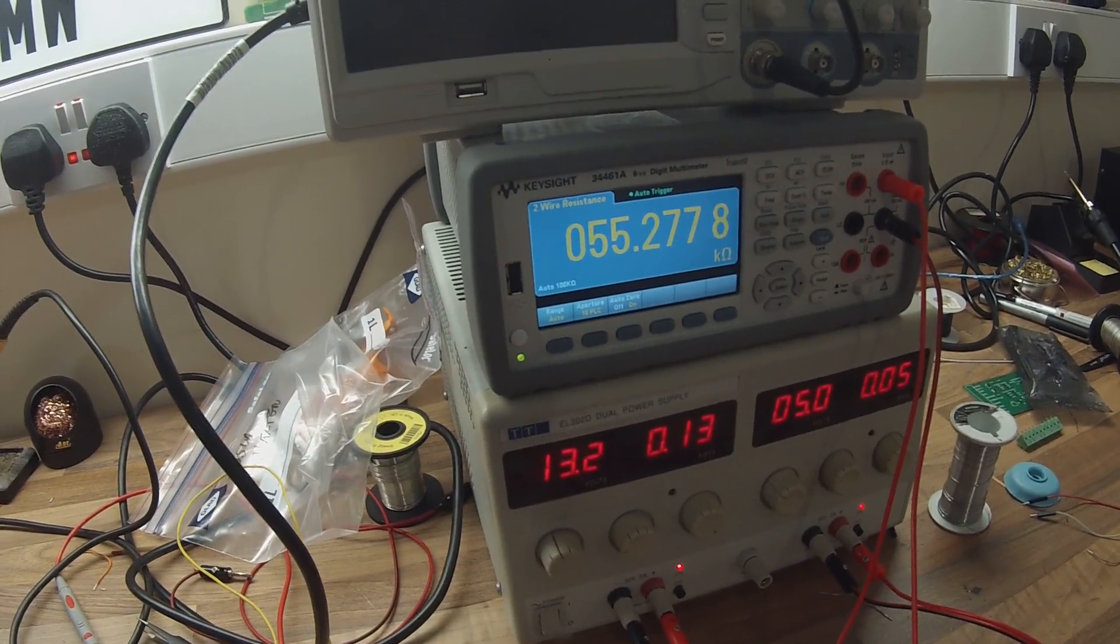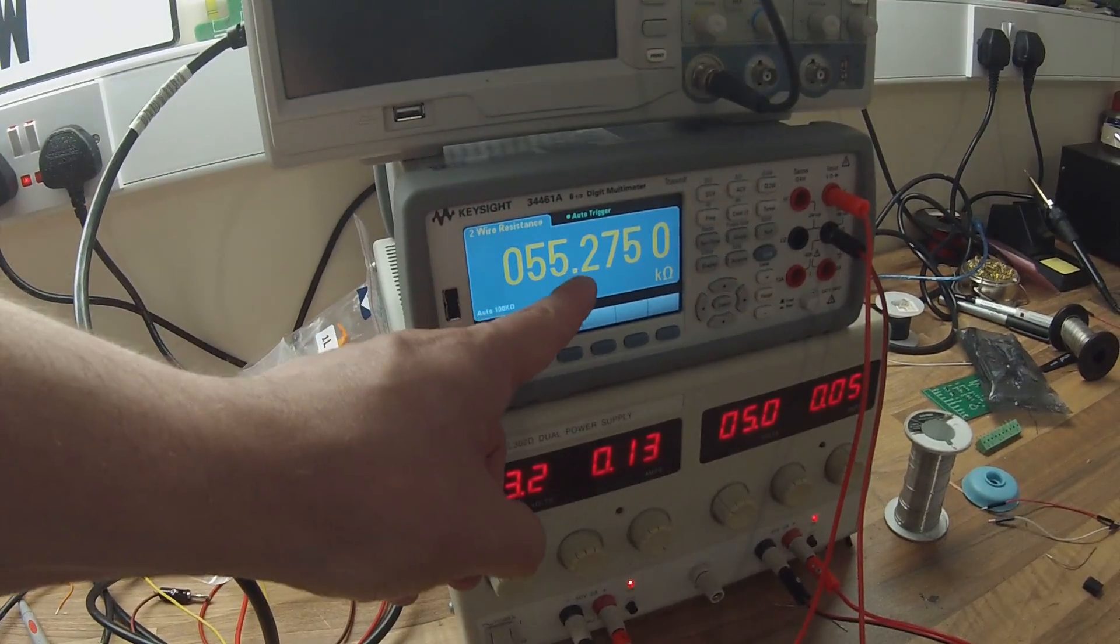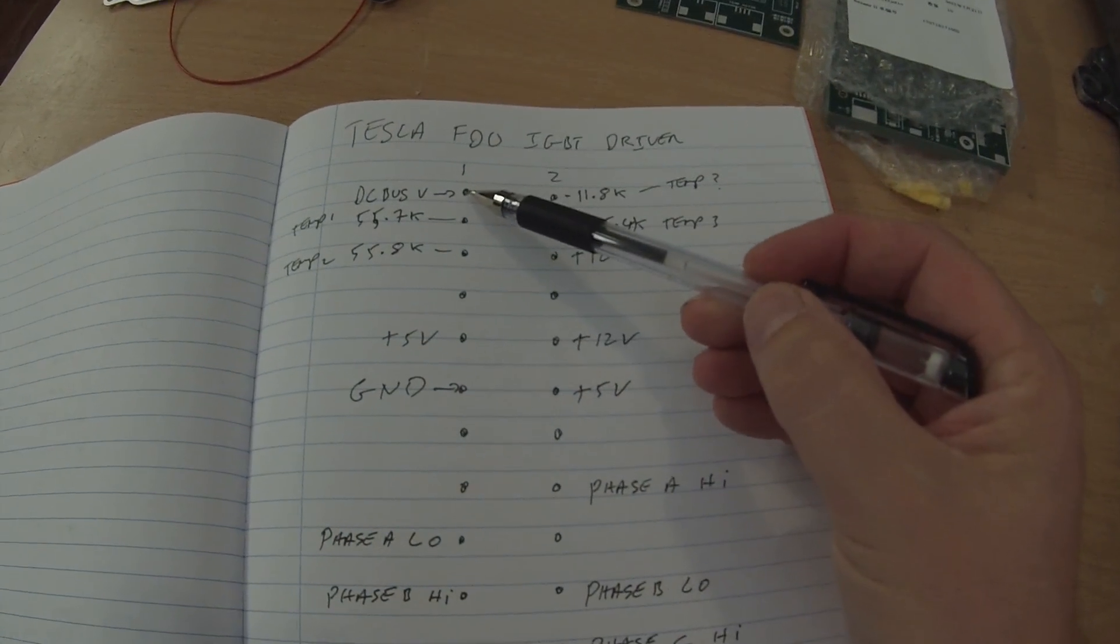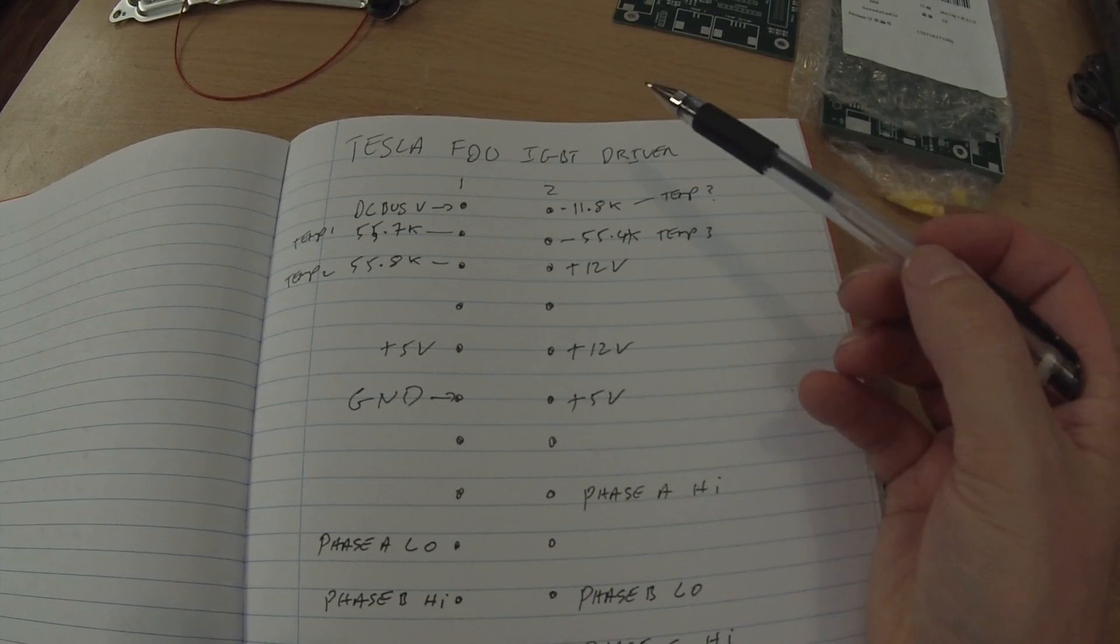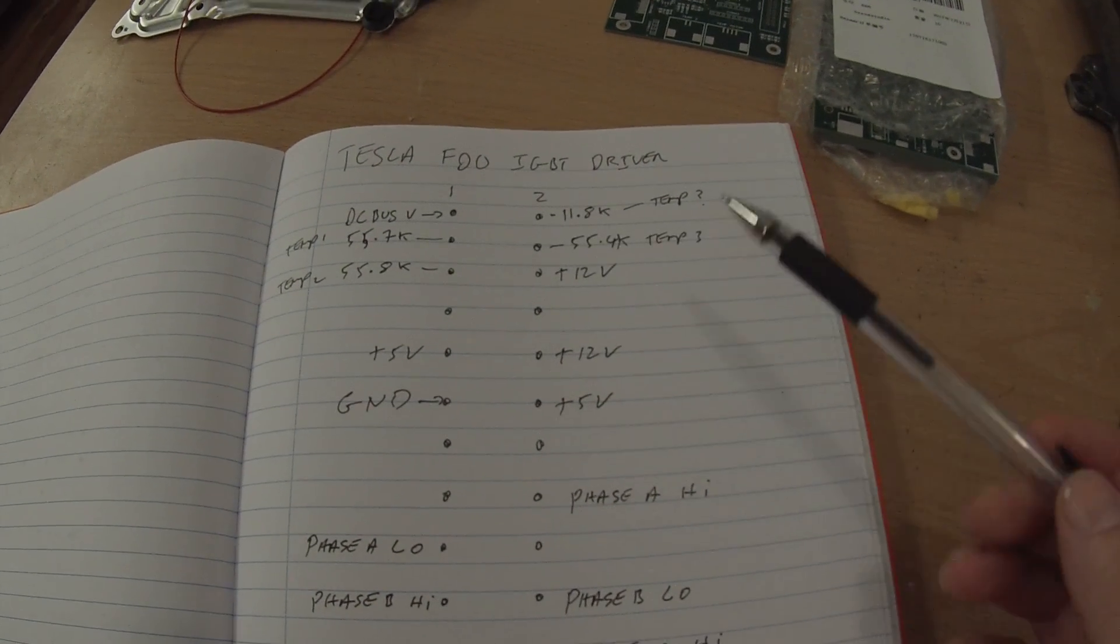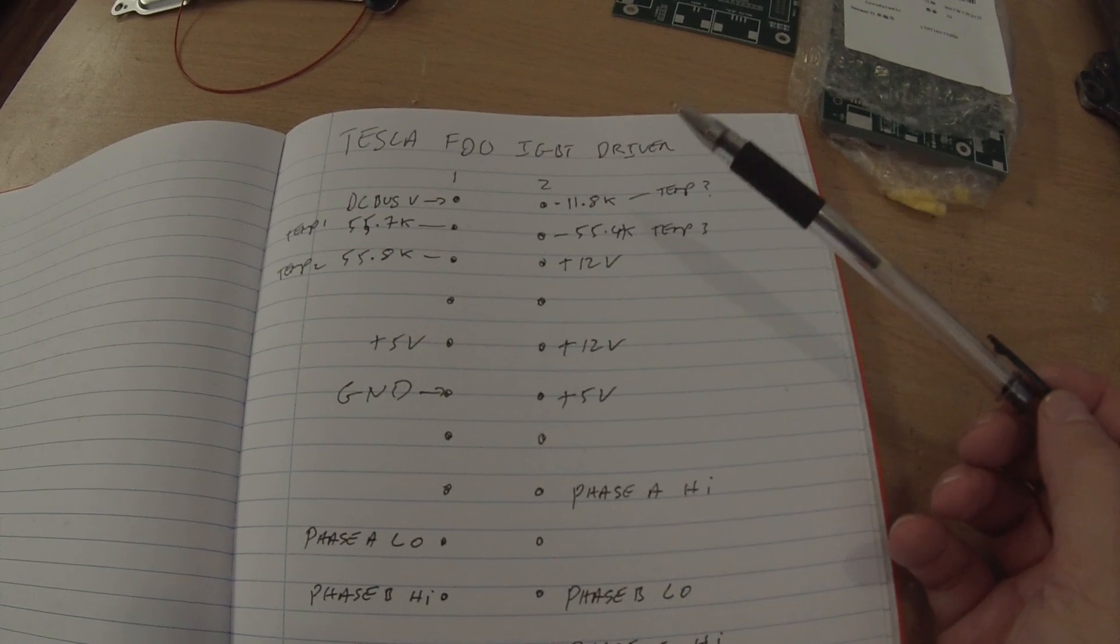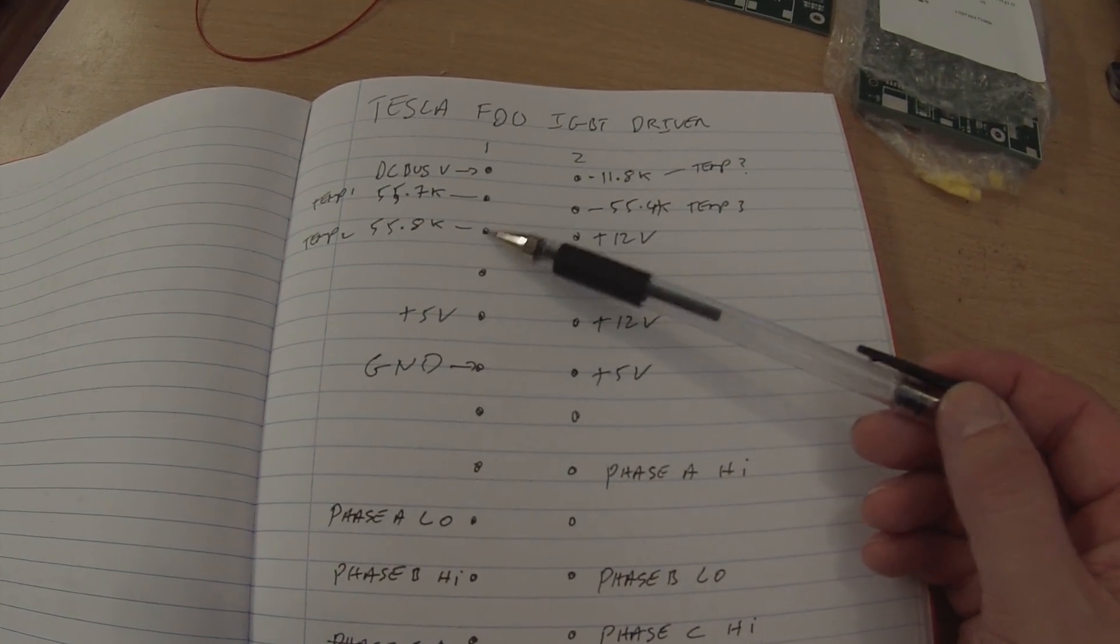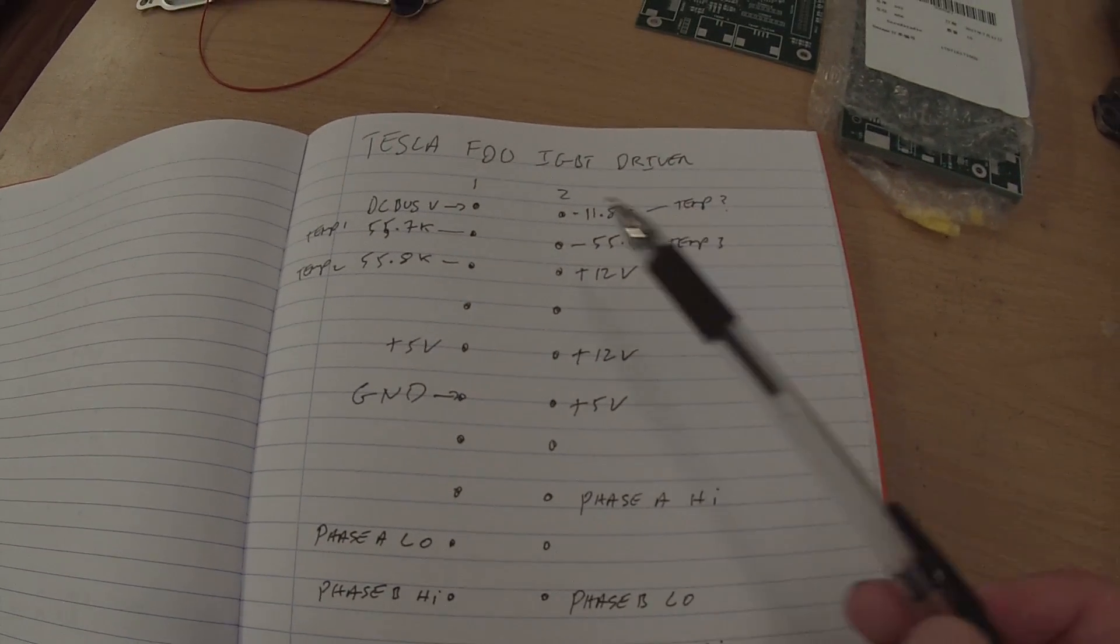You'll see that we have found three pins there with about a 55K resistance. So if we go back to our diagram here, my dodgy notes again, so pin 1 represents the DC bus voltage, and then we have these pins here. Total of four of them, but three give me broadly the same resistance. This pin, this pin, and this pin.